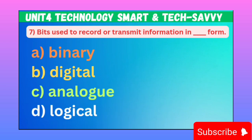MCQ number seven: Bits are used to record or transmit information in this form — it means in what form are bits used to record or transmit information? Option A: Binary. B: Digital. C: Analog. D: Logical. Correct option is B, Digital.